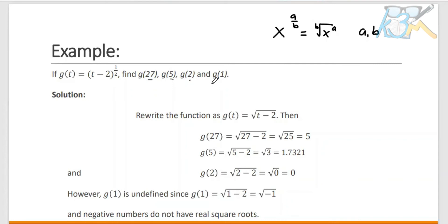Now we go back to our example. For our solution, we rewrite the function as G of T equals the square root of T minus 2. Then, given that our T equals 27, 5, 2, and 1, we just substitute this value in this variable. For G of 27, we have square root of 27 minus 2, which equals the square root of 25, and the square root of 25 is 5.